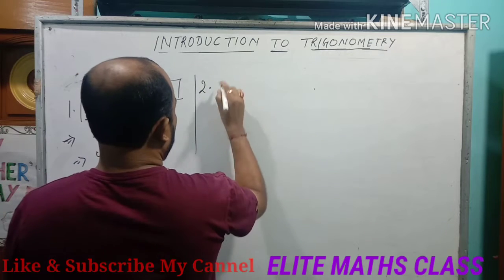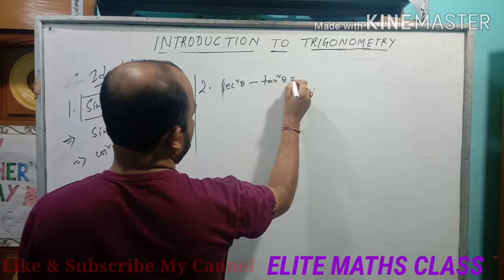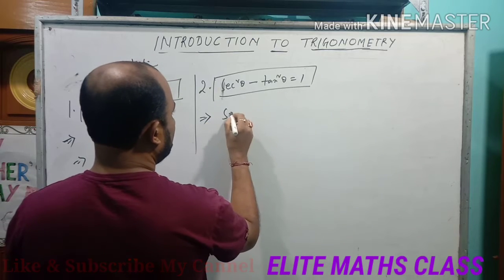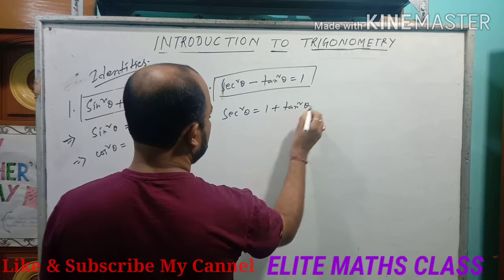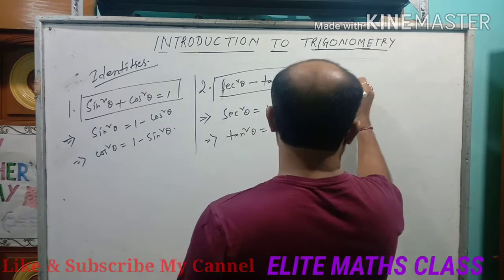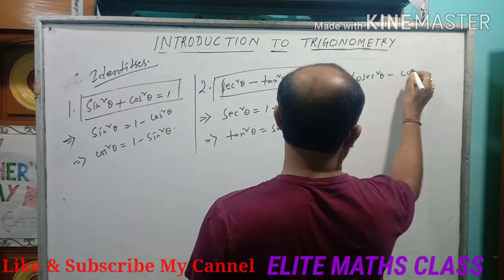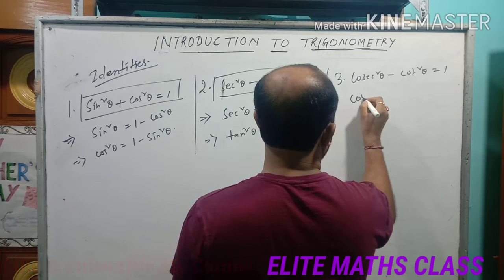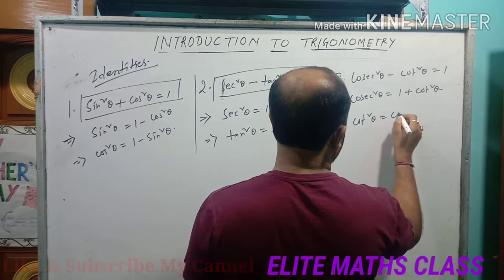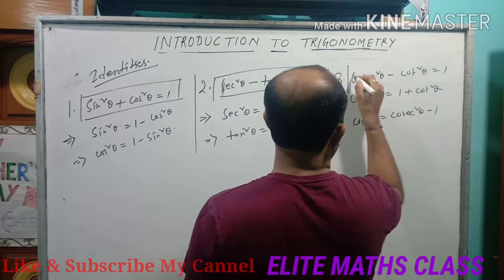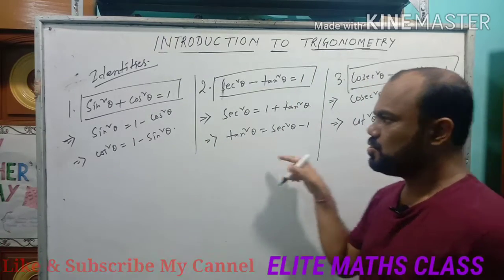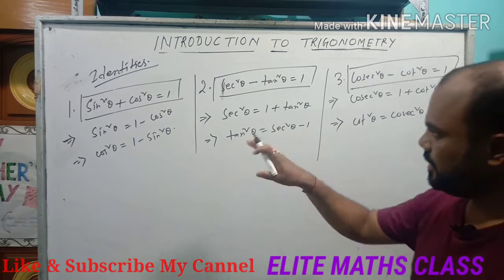The second identity is: sec²θ − tan²θ = 1. This is the fundamental identity. From this: sec²θ = 1 + tan²θ, and tan²θ = sec²θ − 1. The third identity is: cosec²θ − cot²θ = 1. From this: cosec²θ = 1 + cot²θ, and cot²θ = cosec²θ − 1. These three are the fundamental identities, and from each we can deduce two more relations. It is better to memorize all three in every case.